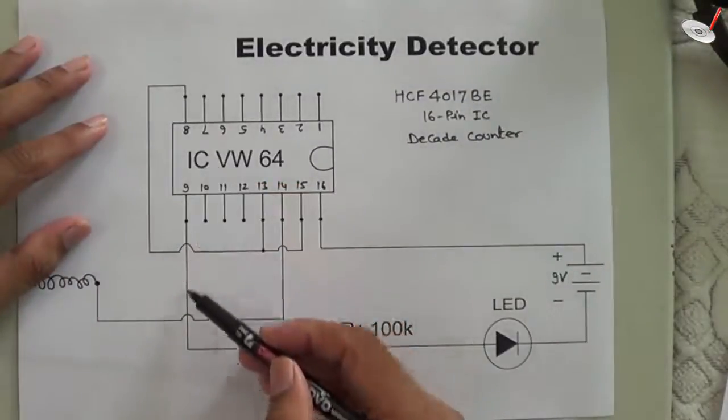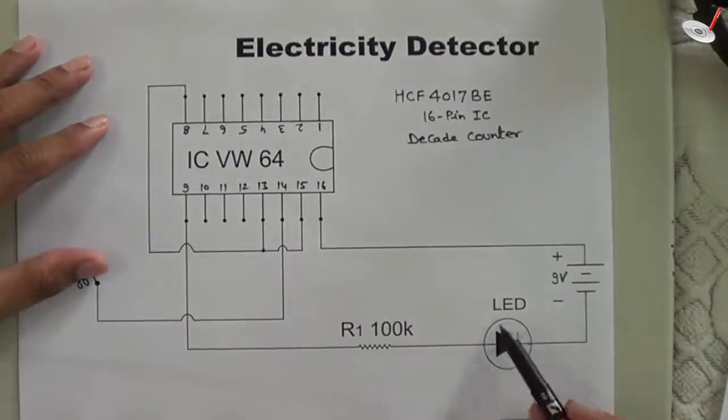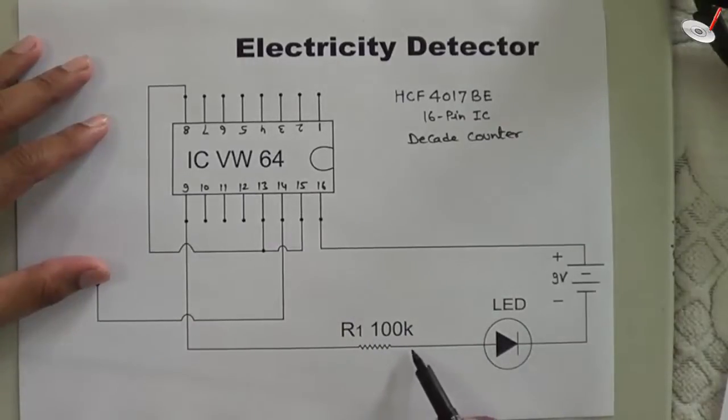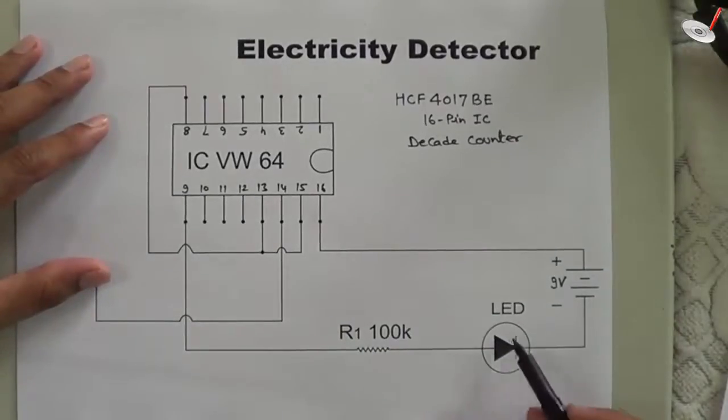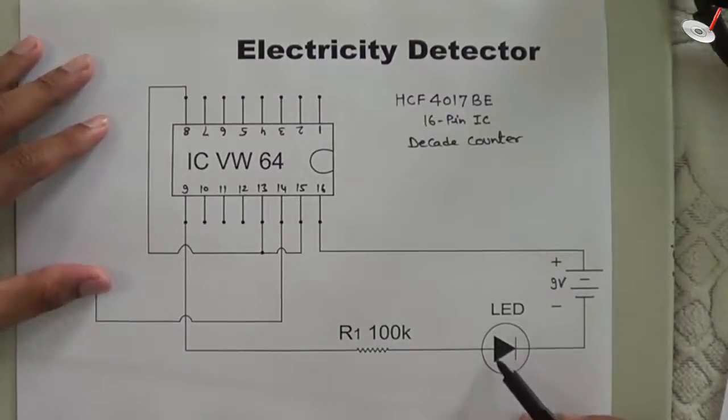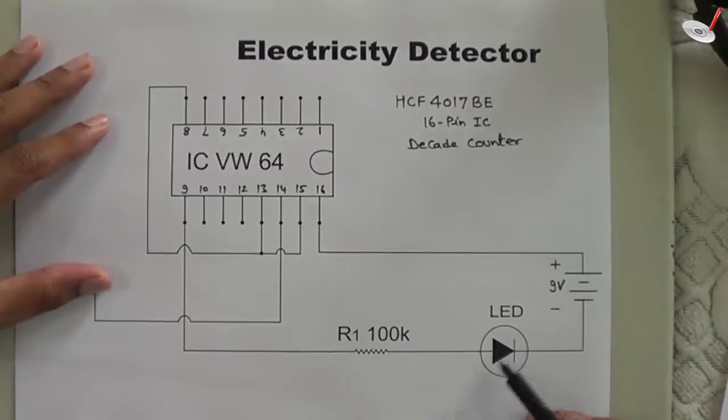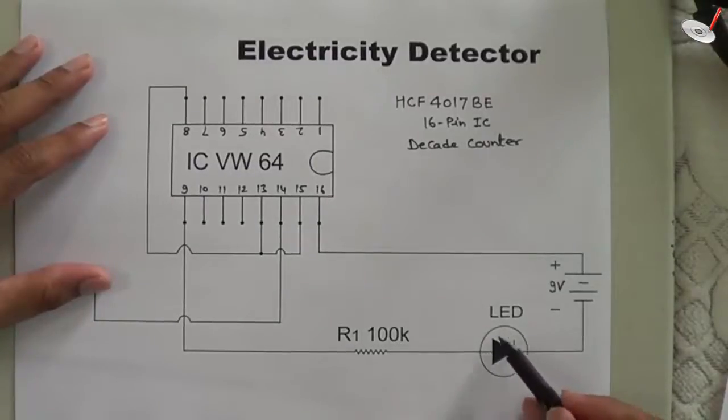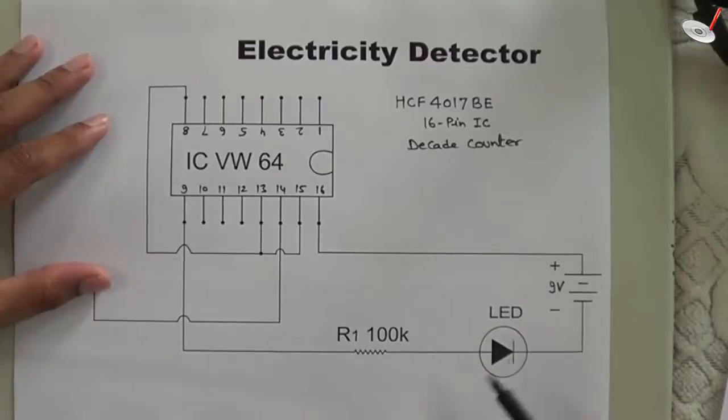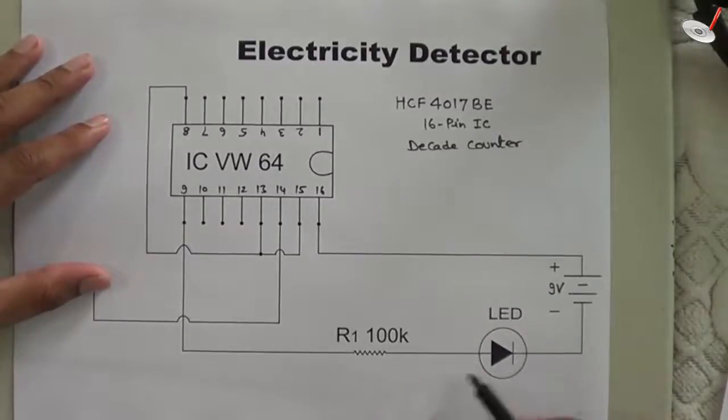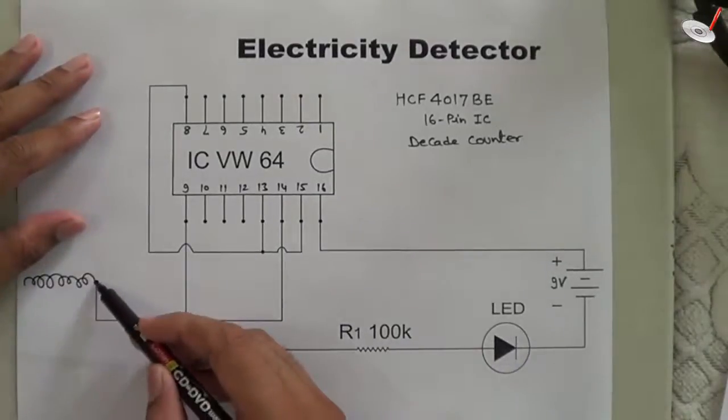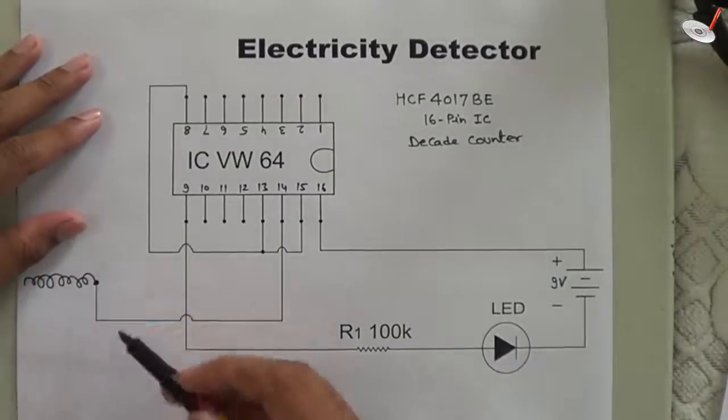This output is taken in the form of blinking of this LED. The 100 kilohm resistor will control the current, or we can say it will control the intensity of the LED. If its value is high, it will illuminate with very low intensity. If its value becomes low, it will glow with high intensity and may burn. When we bring this wire in the vicinity